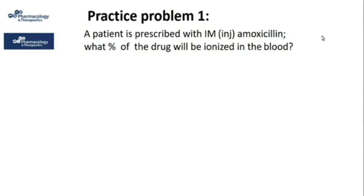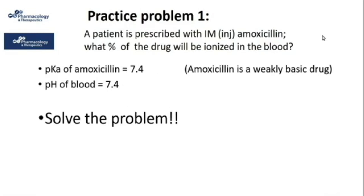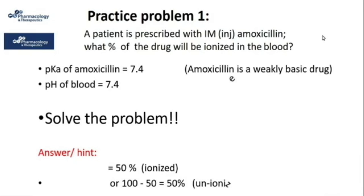Now, a practice problem: a patient is prescribed intramuscular amoxicillin. What percent of the drug will be ionized in the blood? The pKa of amoxicillin is 7.4 and it is a weakly basic drug. The pH of the blood is also 7.4. The answer is provided for your convenience — please draw a conclusion for yourself.